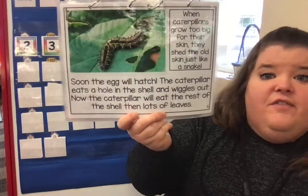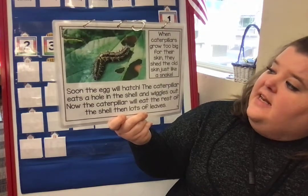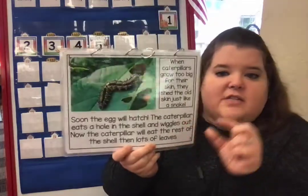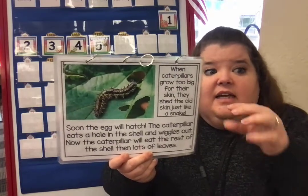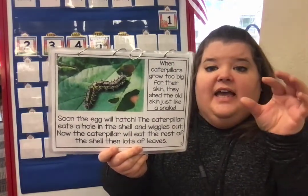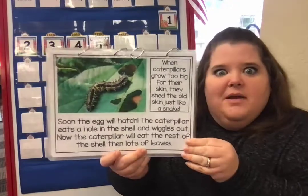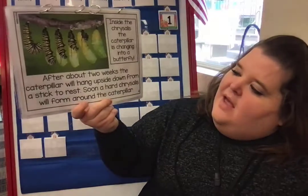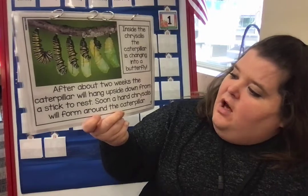Then the caterpillar will eat the rest of the shell and then the leaf it's sitting on. When they grow too big for their skin, they shed the old skin just like a snake. When a caterpillar starts out it's teeny tiny, and as it gets bigger it sheds its skin — then grows bigger and sheds more skin. Isn't that crazy? Just like a snake when it grows, it sheds its skin off.